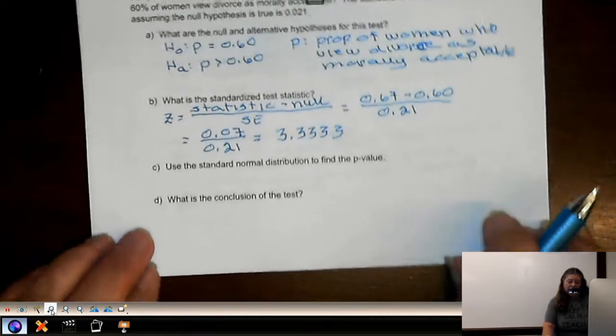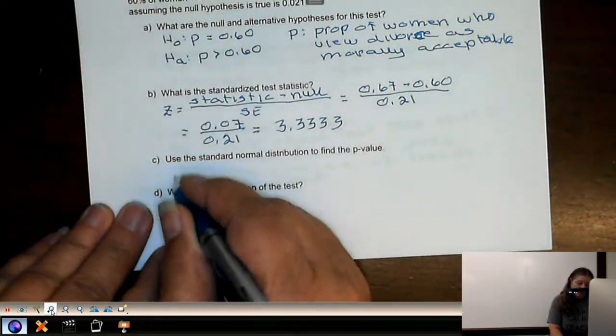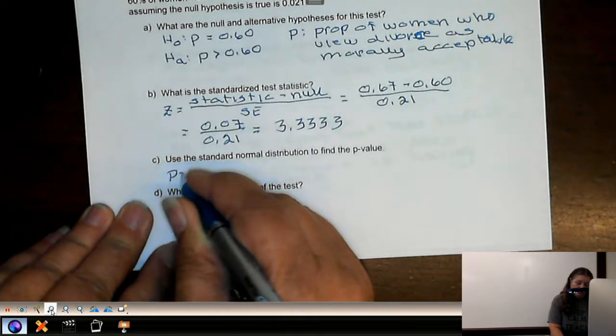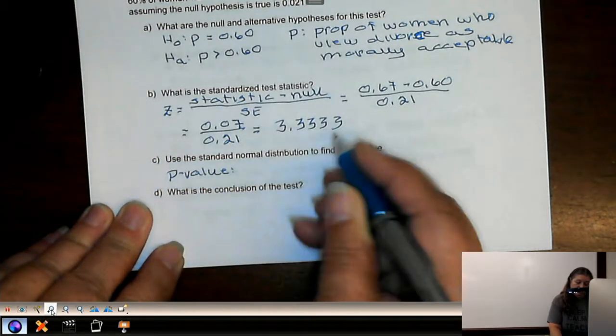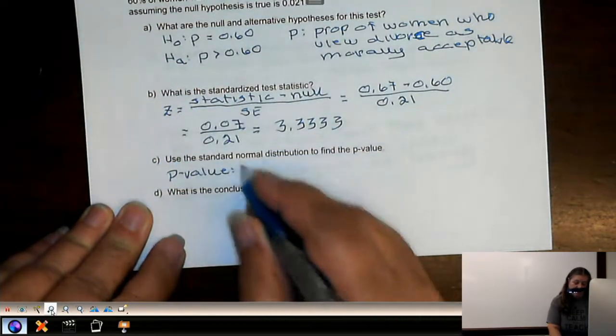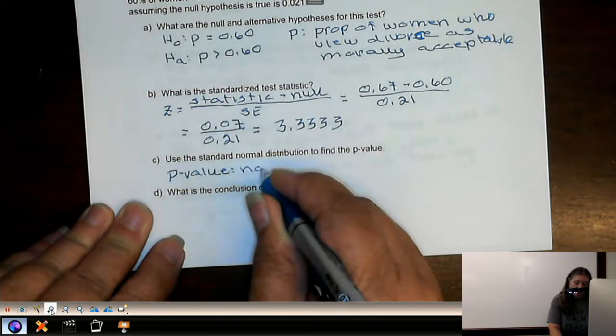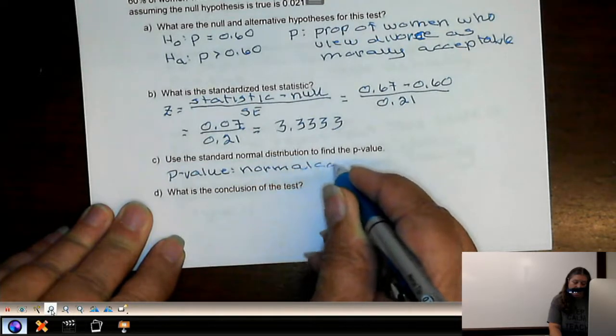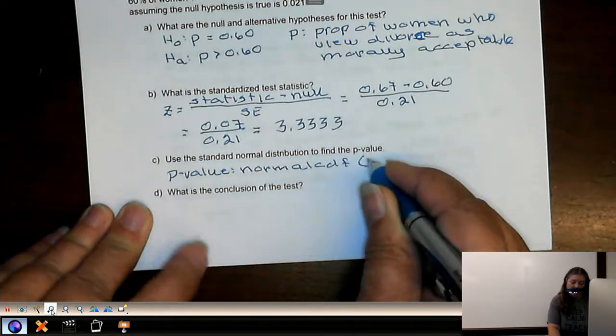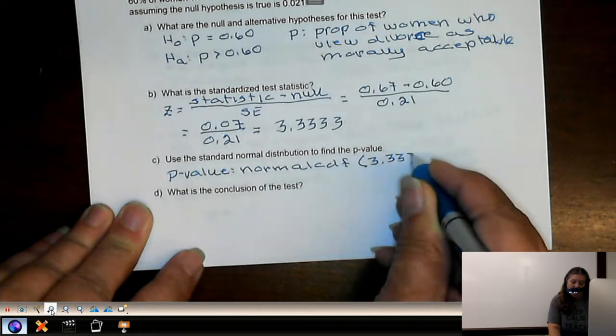Now we want to use the normal standard to find the p-value. So the p-value, it's a right tail, so we do normal CDF, 3.3333, 999.